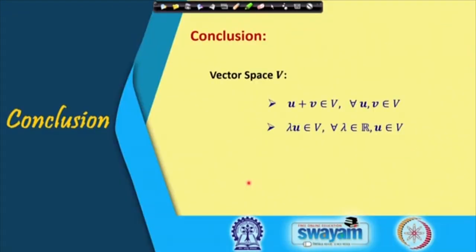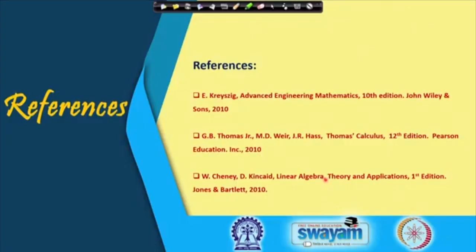In conclusion, for a vector space the most important properties are additive closure — U + V must belong to V — and scalar closure — lambda·U must belong to V. These are the closure properties, the most important properties of vector spaces. We have seen several examples including vector spaces and vector subspaces. These are the references used for preparing the lectures. Thank you for your attention.